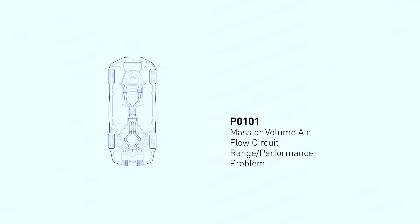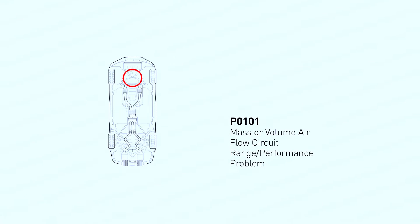The P0101 code indicates a problem with the mass airflow (MAF) sensor circuit. This sensor measures the amount of air entering the engine, which is crucial for proper air-fuel mixture. A faulty MAF sensor can cause rough idling, poor fuel economy, and even decreased power.